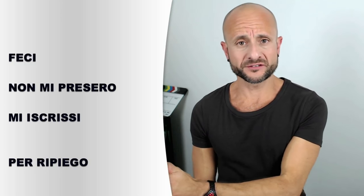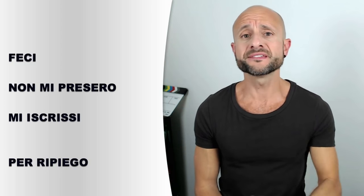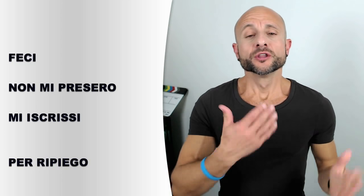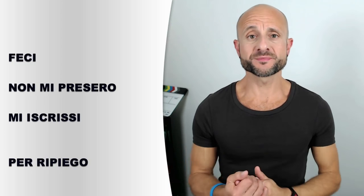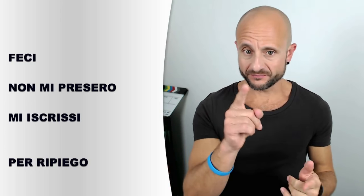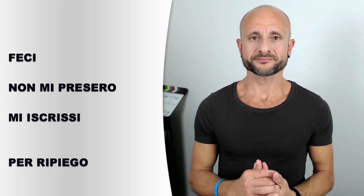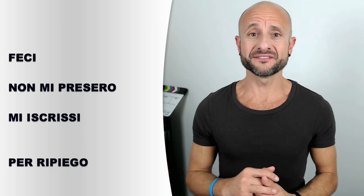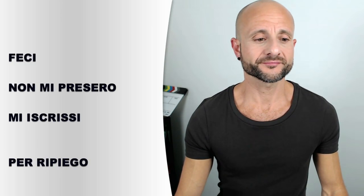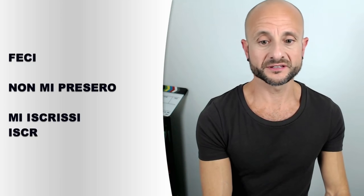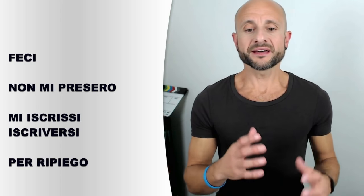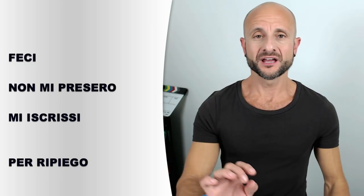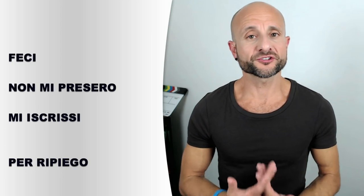Feci l'esame d'ammissione — feci comes from 'fare,' good. Non mi presero — the infinitive is 'prendere,' good. And mi iscrissi — the infinitive is 'iscriversi,' which means to enroll. These are verbs in a tense you probably don't know — the passato remoto. You know the passato prossimo and the imperfetto as past tenses, but you've probably not studied the passato remoto. We don't even teach it at my university because it's not believed to be used a lot in conversation — but I do use it. It's the historical past tense.